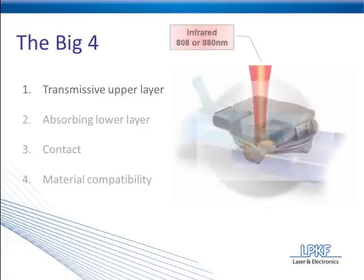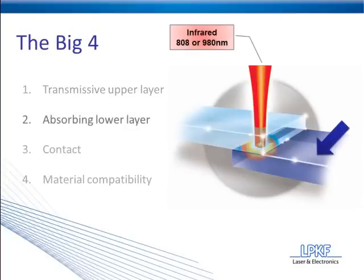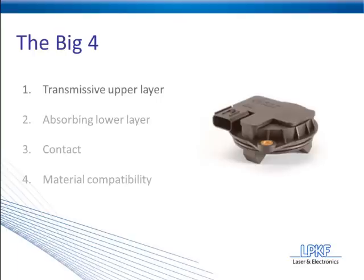Factor number two is the absorbing lower layer. The main characteristic of this piece of plastic is that it needs to have the ability to absorb the same laser radiation the upper layer transmitted. This absorption creates heat, and that heat is what allows the plastic to become molten and create a weld. Most thermoplastics are naturally transparent to laser radiation, so in order to achieve absorptive properties, additives have to be used — typically pigmentations. In the case of the gear sensor, carbon black was used. This is most common because it's the best absorber and a very cheap way to achieve a black color. Other colors can be used, but black is the best absorber and already a very commonly used pigmentation in the injection molding process.